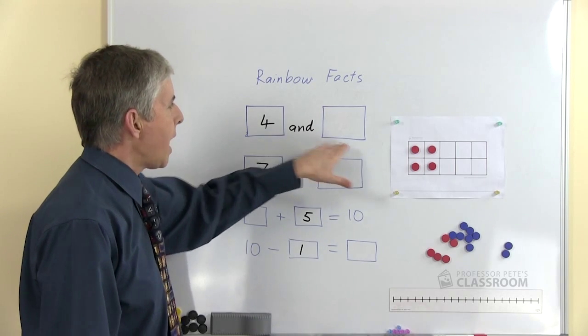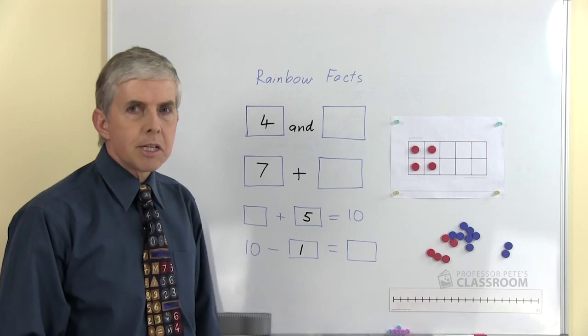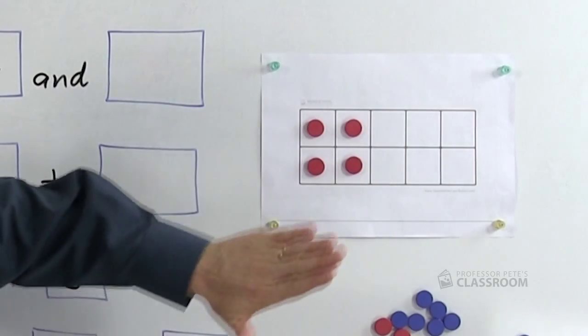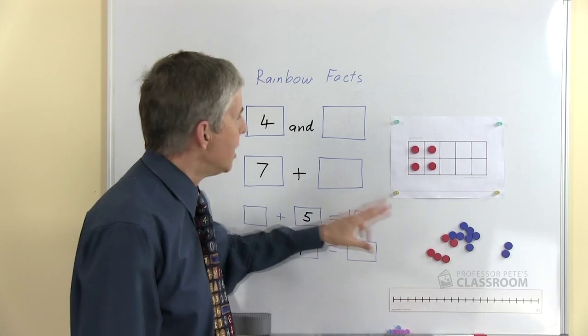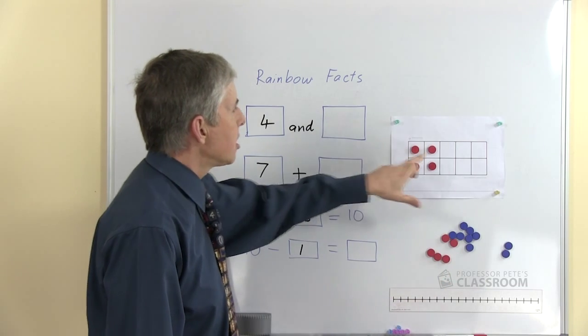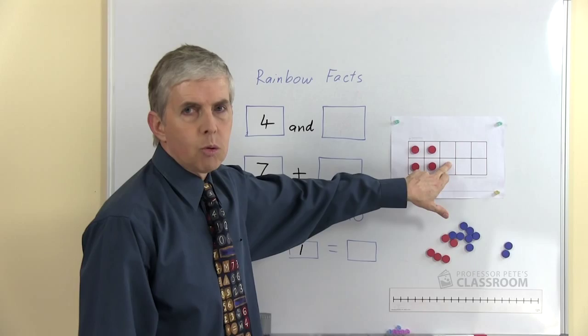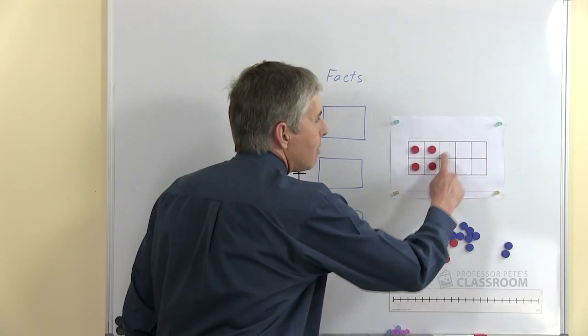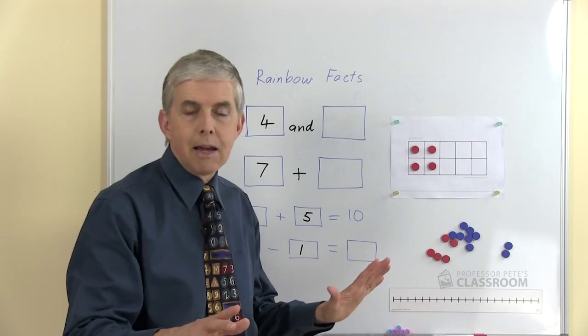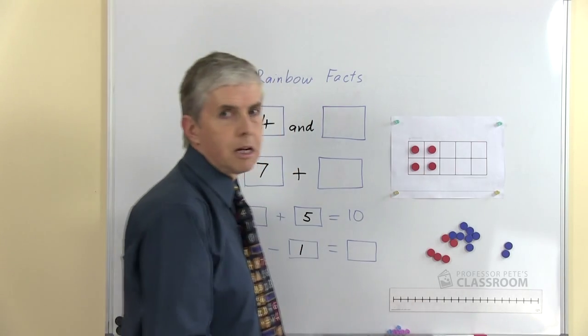So for example, we have 4 and something. Using the ten frame, we can put out four counters like that and recognize it straightaway without even counting them. And we're looking for what is the number that goes with 4 to equal 10. Now you may be able to see this just looking at the empty squares. Again, we don't want you to count them, just recognize the number.